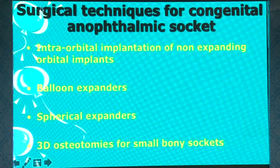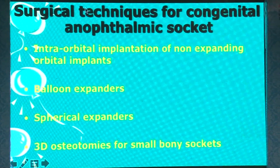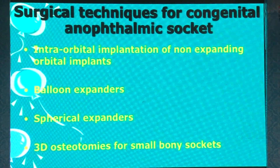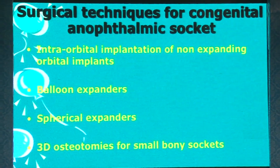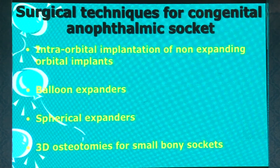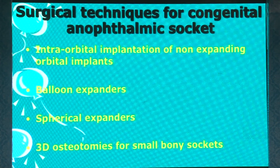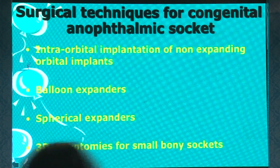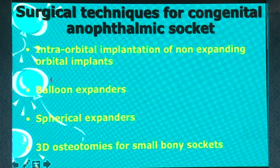There are several surgical techniques as well which can be used. You can put in intraorbital implants which can be non-expanding, which then sometimes need to be serially changed and increased. You need to alter both the size of the socket as well as the orbit, and balloon expanders have been used for that purpose.